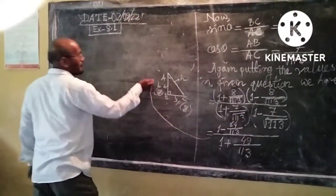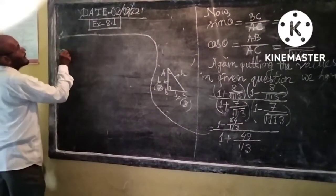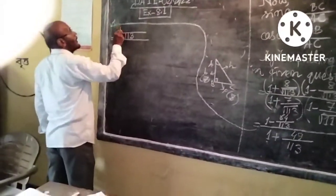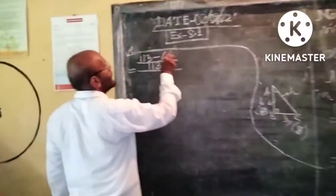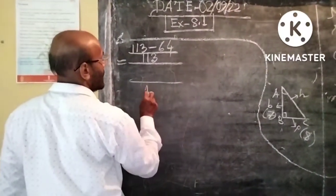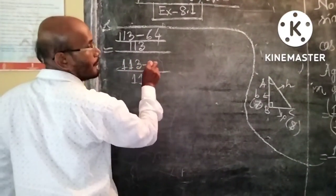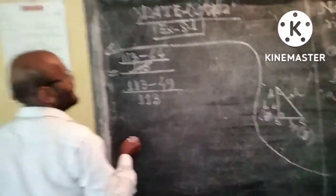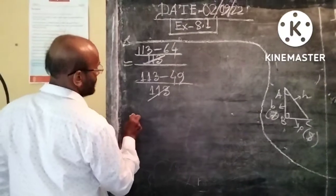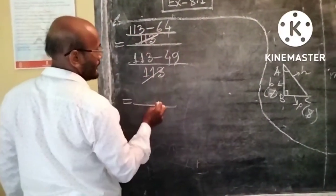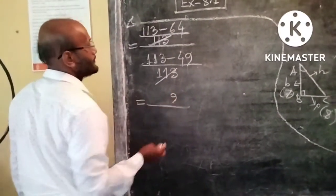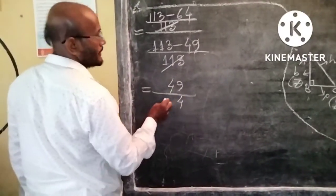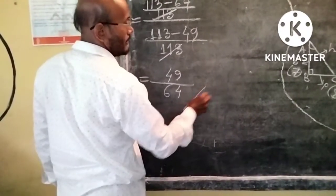Next step: taking LCM 130, we have 130 minus 64 divided by 130 minus 49. The denominators cancel. After simplifying, we have 130 minus 64 equals 66, and 130 minus 49 equals 81. Simplifying: 66 by 81, which gives us the final answer.